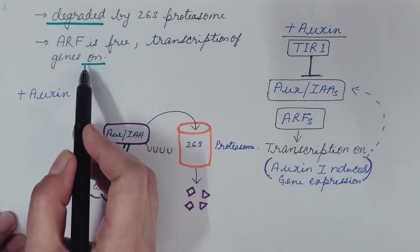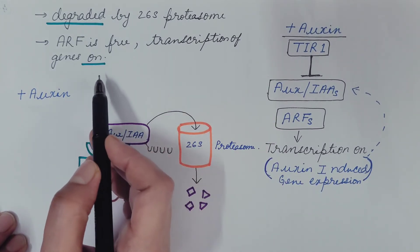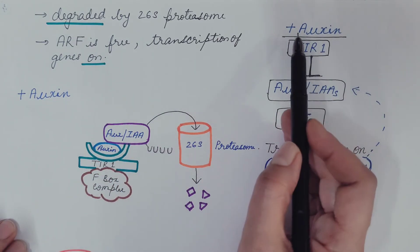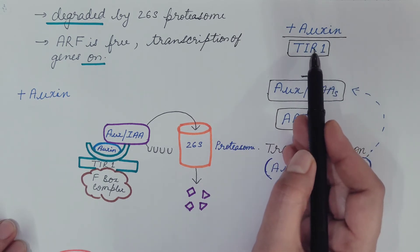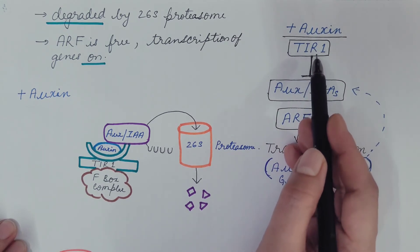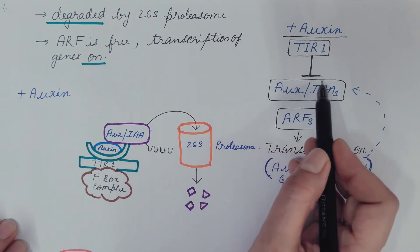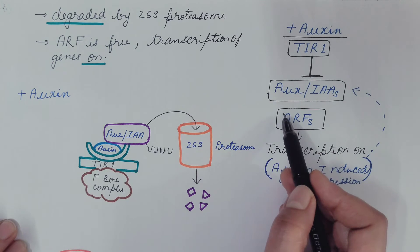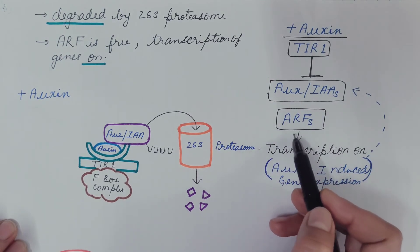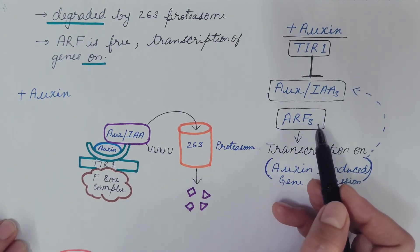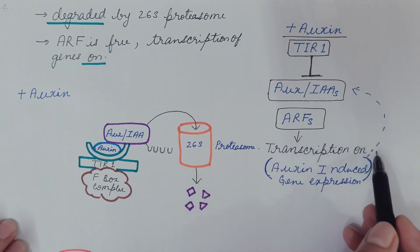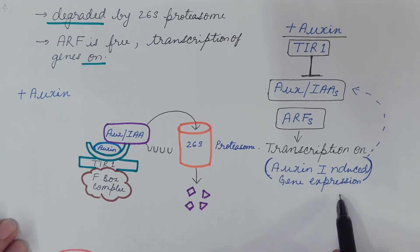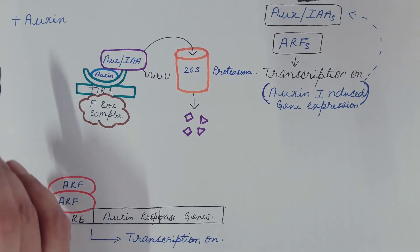With the degradation of the inhibitor, the ARF transcription factor is free — it transcribes the genes and we say that transcription is on, or the signaling is on. So when auxin is present, it binds to the receptor; this receptor then binds with the inhibitor AUX/IAA, as a result of which the transcription factor ARF is free, and hence transcription is on — there is auxin-induced gene expression.